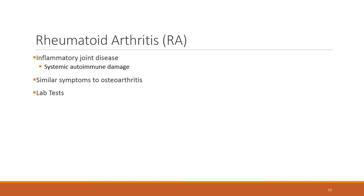Lab results are revealing for rheumatoid arthritis: rheumatoid factor is present, and antibodies IgG and IgM will be present. When synovial fluid is aspirated, it will show inflammatory exudate. The rule of thumb: small joints affected = likely rheumatoid arthritis; large joints = osteoarthritis. Symmetrical involvement in both hands = rheumatoid arthritis; asymmetric, one knee = osteoarthritis.